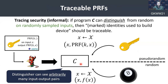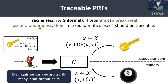However, Goyal et al. discussed in their work that this notion is not in general sufficient. For example, if the distinguisher C has hardwired in it the tuple (X*, PRF_K(X*)), then this notion does not make sense because C can always break the security of the pseudorandom function game. So they relax this notion to say that C should be able to differentiate between input-output pairs from a PRF and from a random function on randomly sampled inputs of the domain, which they called weak pseudorandomness.